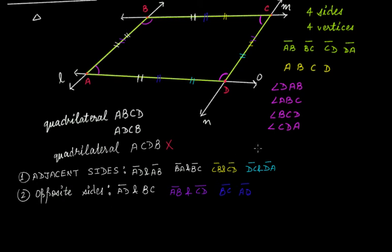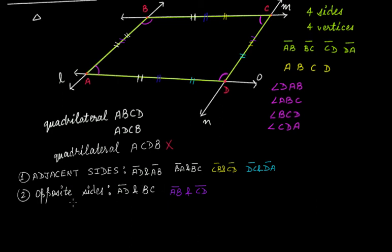One correction — AD and BC are the same pair as BC and AD, so I should not have listed them separately. Since the quadrilateral has four sides, it will have two pairs of opposite sides. So the opposite sides are AD and BC, and AB and CD.